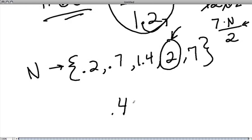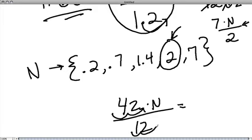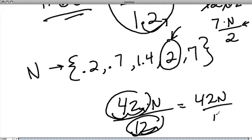If we had 0.42 times N over 0.12, in this case you multiply by 100 because the decimal point had to move twice. Or in other words, these numbers would have to get 100 times bigger. So in that case, we get 42 over 12 again.